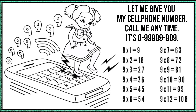Nine times one is nine, nine times two is 18, nine times three is 27, nine times four is 36, nine times five is 45, nine times six is 54, nine times seven is 63, nine times eight is 72, nine times nine is 81, nine times ten is 90, nine times eleven is 99, nine times twelve is 108.